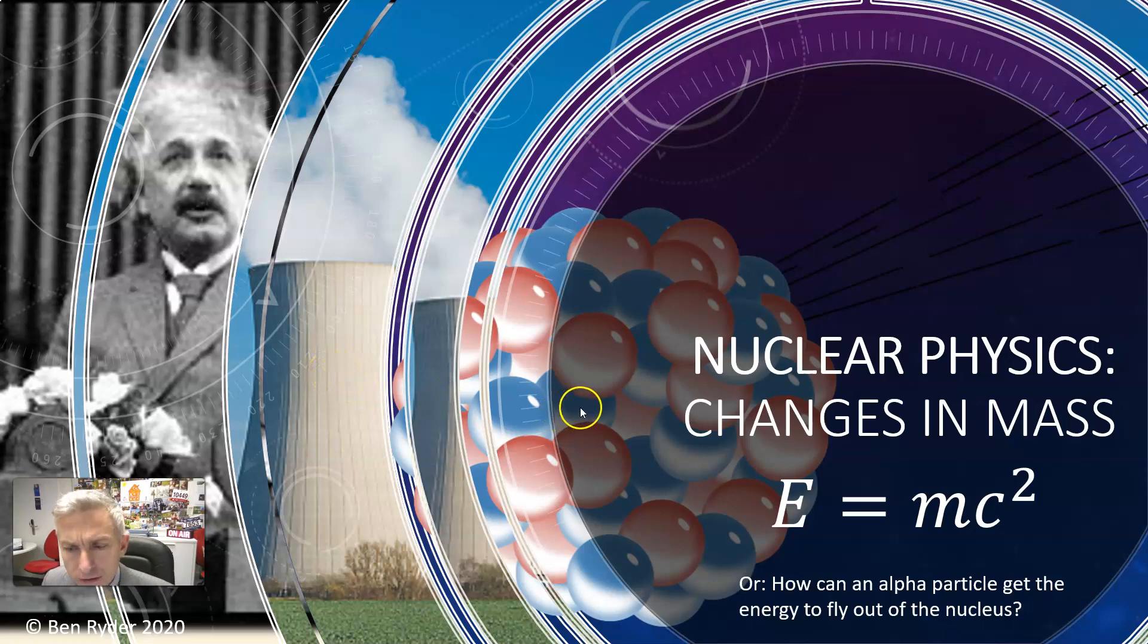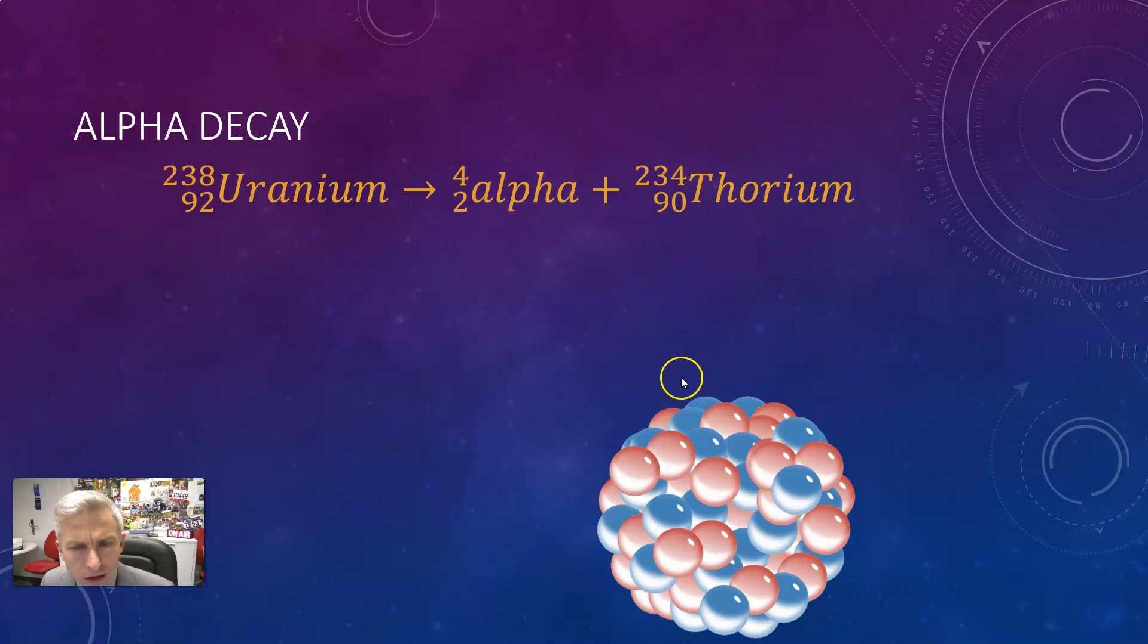You may not know that in fact a little bit of mass is converted into energy in a whole number of different nuclear events. In particular I'm going to talk first about alpha particle decay.